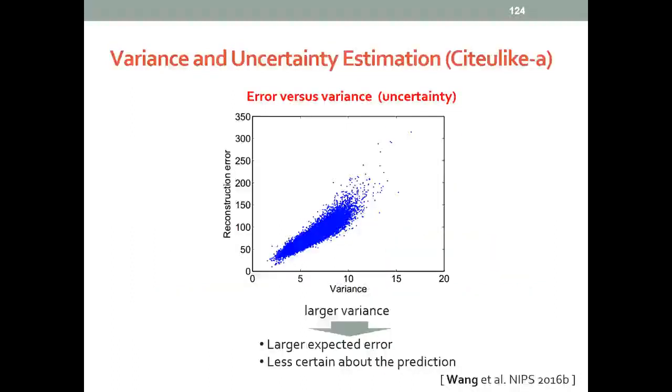To verify the use of the output variance from the NPN as uncertainty estimate, we plot the error versus the variance for each point in the dataset. We can see larger variance indicates larger expected error, which means the model is less certain about the prediction. This verifies the use of the variance as uncertainty estimation.